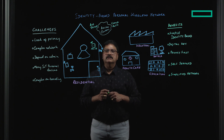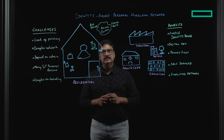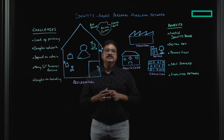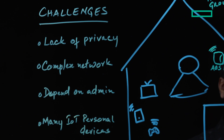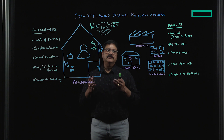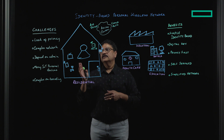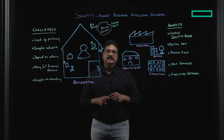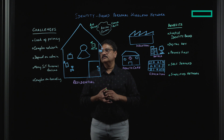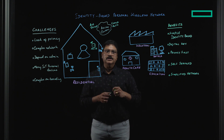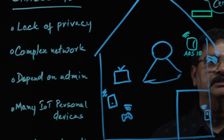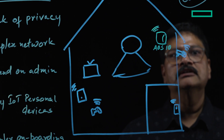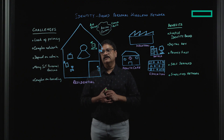The challenges today are when a user brings in their personal device, they lack privacy because they have to enter into an existing network, and they have to rely on their administrator to onboard their device. If they need privacy, they have to try to manage or modify the network, which becomes complex, and they have to depend on their administrators as well. Moreover, in today's world there are a lot of IoT devices, and they are of varying different complexity as well as legacy formats, so it's not easy to take care of all of that.